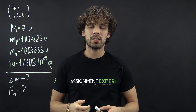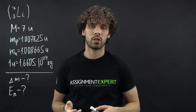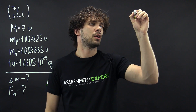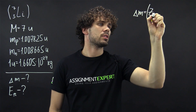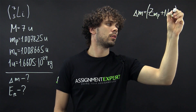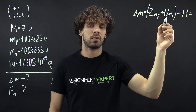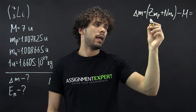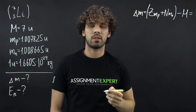First of all, note that the mass of the nucleus is always less than the sum of the masses of all the nucleons inside of this nucleus, and for this difference we have the special formula: Delta M equals Z times M_P plus N times M_N minus capital M. In this formula, Z and N stand for the number of protons and the number of neutrons, M_P and M_N are the masses of a proton and neutron, and capital M is the mass of the nucleus.